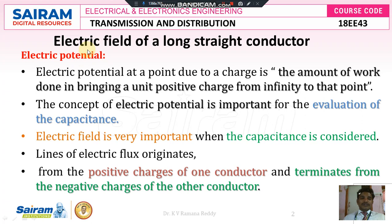Before going to discuss about the electric field of a long straight conductor, first of all, what is meant by electric potential? Electric potential is at a point due to a charge. That means if you take one conductor at any one point, due to the charge, that is the amount of work done in bringing one unit positive charge from infinity to that point.